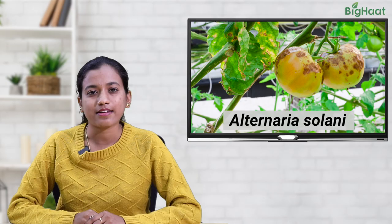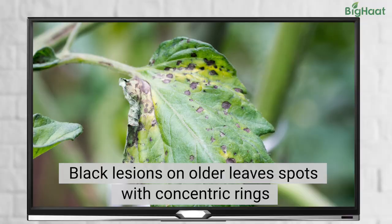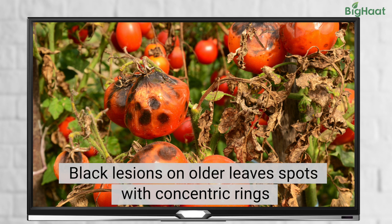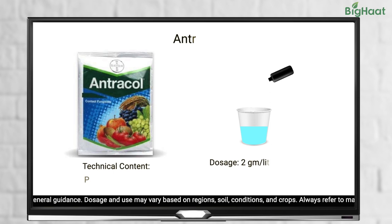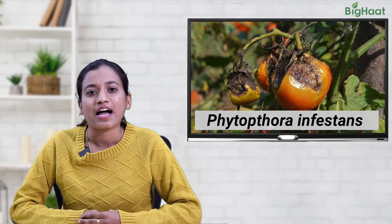Next, we have early blight, caused by Alternaria solani. Initially, small lesions appear on the oldest foliage, which then turn yellow and cause leaves to fall from the bottom upward. To treat this, we recommend using Ravers at 1.6 ml per liter of water, Trocol at 2 grams per liter of water, or Curzate at 2 grams per liter of water.